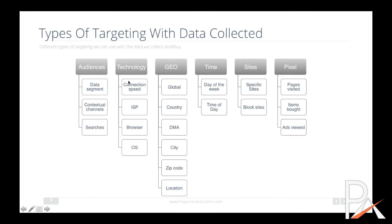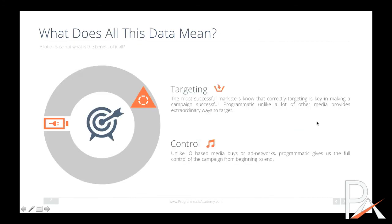Other targeting types include contextual channels, search, and technology — such as connection speed, ISP, browser type, and operating system. Geographic targeting goes down by DMA, city, zip code, or specific locations. You can also target by time of day, day of week, specific sites visited, and through pixels — since the pixel fires when a page is visited, you can see what pages were visited, what items were bought, and what ads were viewed.